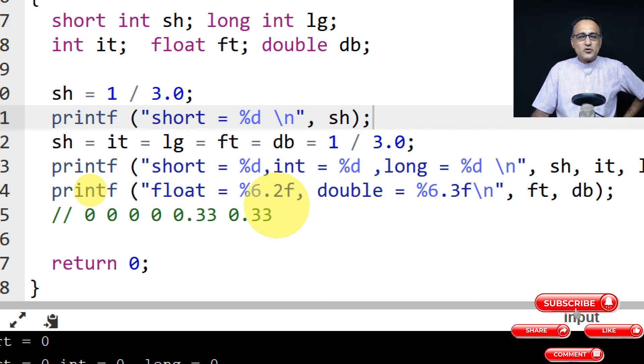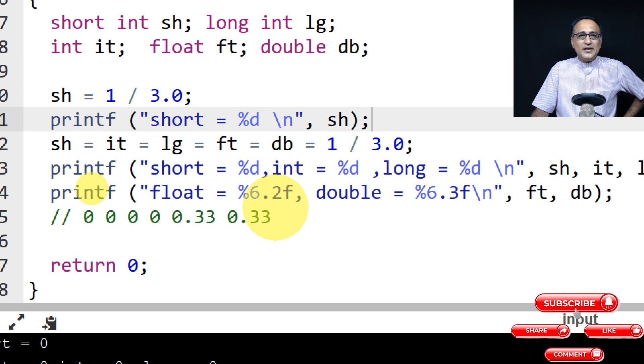You need to exercise caution when copying data from float to int because the fractional part will get lost. This assumes the data can fit into int. If the data is beyond the capacity of int, you'll have unpredictable results.